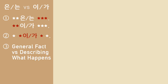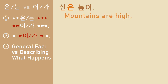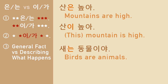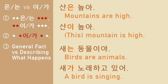Difference number three: 산은 높아. When you're saying a general fact, you use 은 or 는. If you say 산이 높아, then it's like 'this particular mountain is high.' 새는 동물이야 is a general fact. 새가 노래하고 있어 — when you're describing what's going on or what's happening, you use 이/가 with the subject.